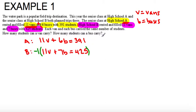So the top stays how it is, 11V plus 6B equals 391, and then the bottom I'm multiplying everything by negative 1. So I have negative 1 times 11V is negative 11V, negative 1 times 7B is negative 7B, and then negative 1 times 425, and then I can add my like terms.